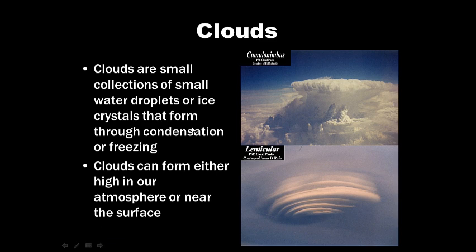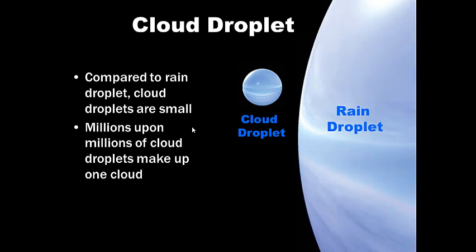All right, clouds. Clouds are small collections of small water droplets, ice crystals that form through condensation or even freezing. Clouds can form either high in our atmosphere or even near the surface. Clouds are just made up of billions upon billions of little water droplets.